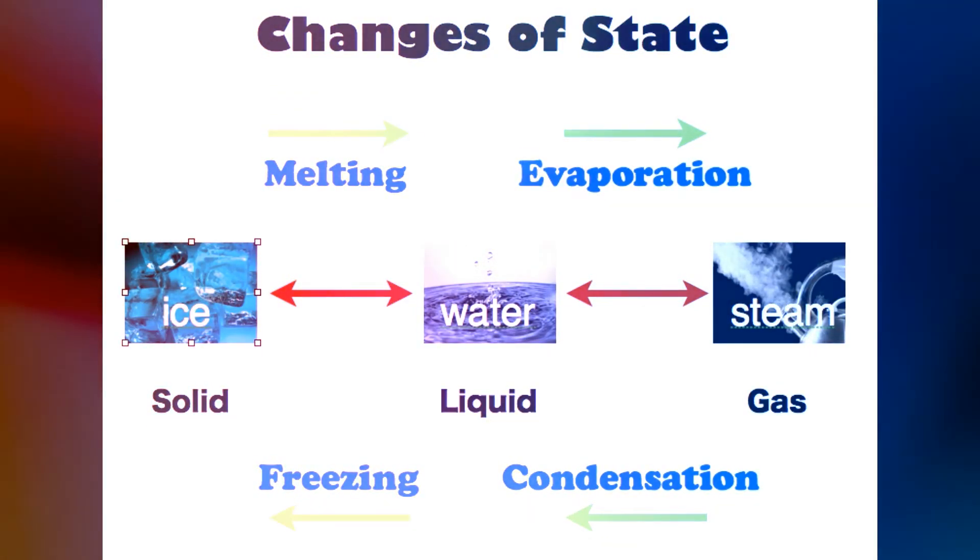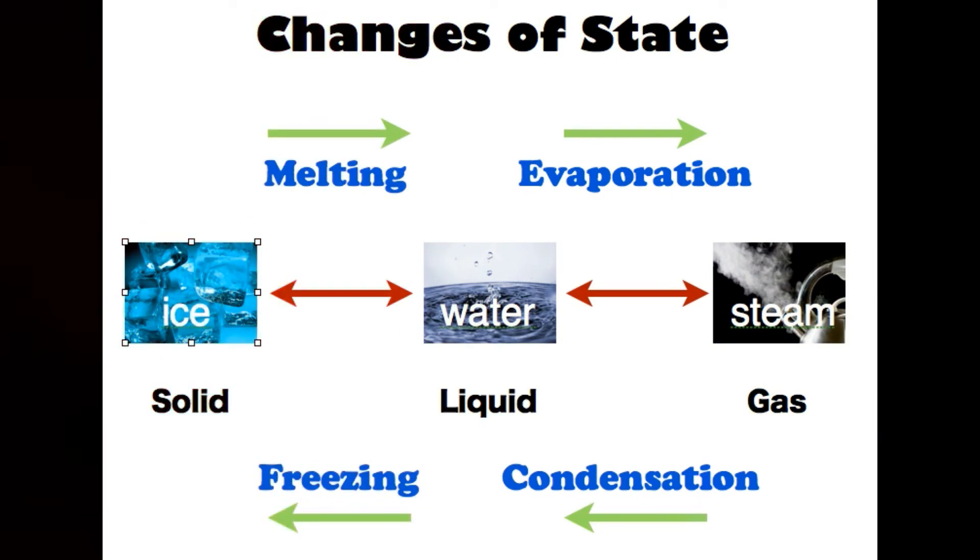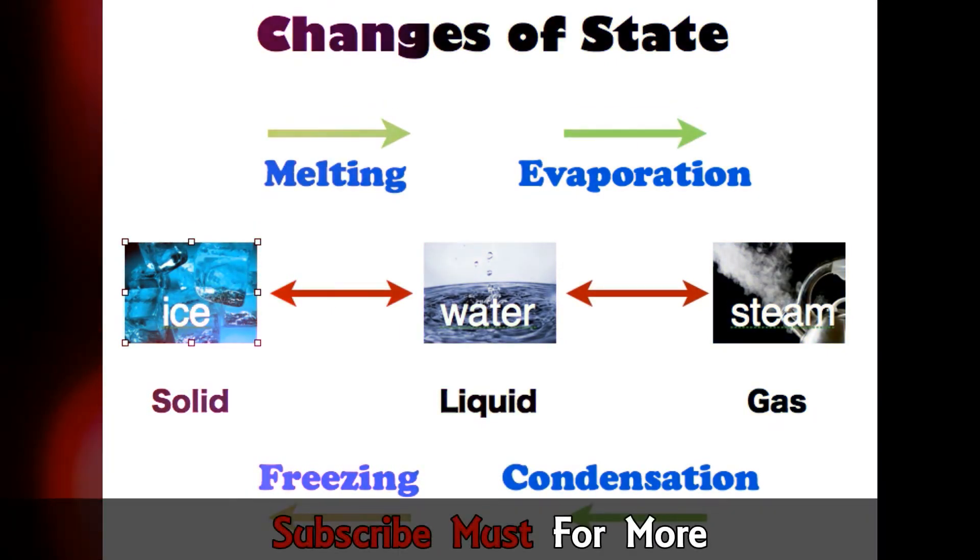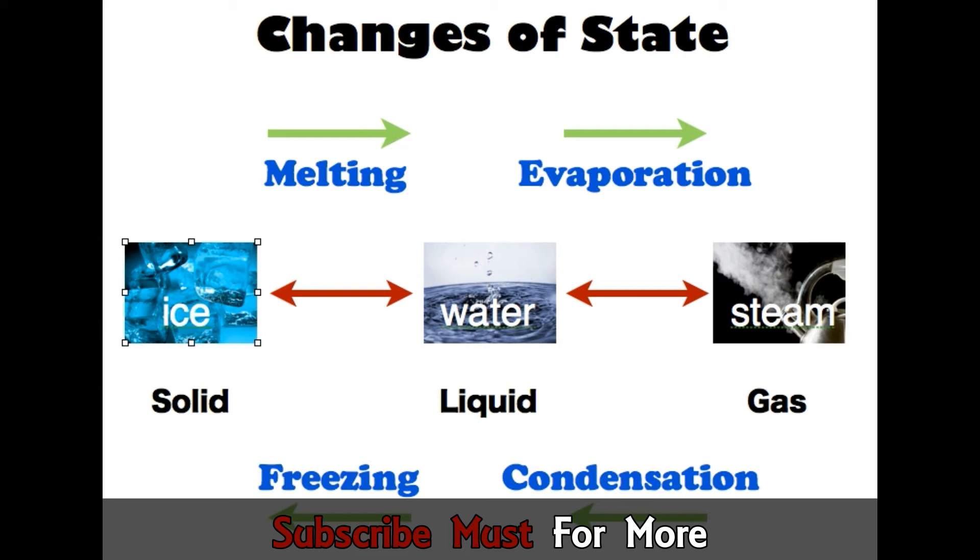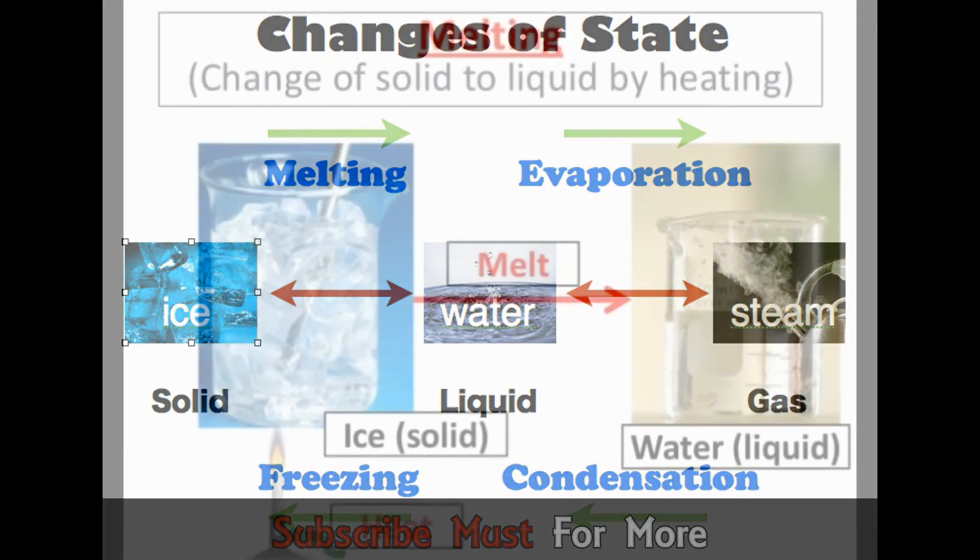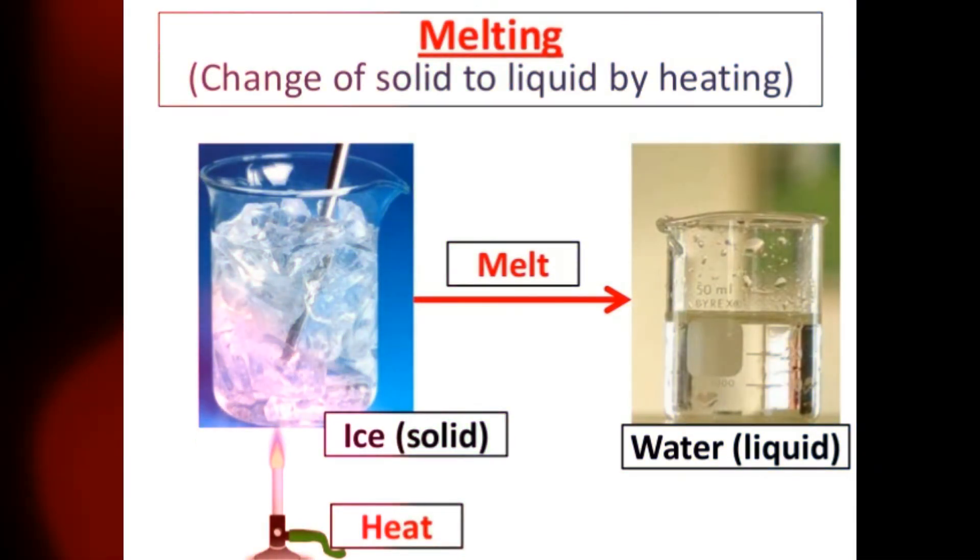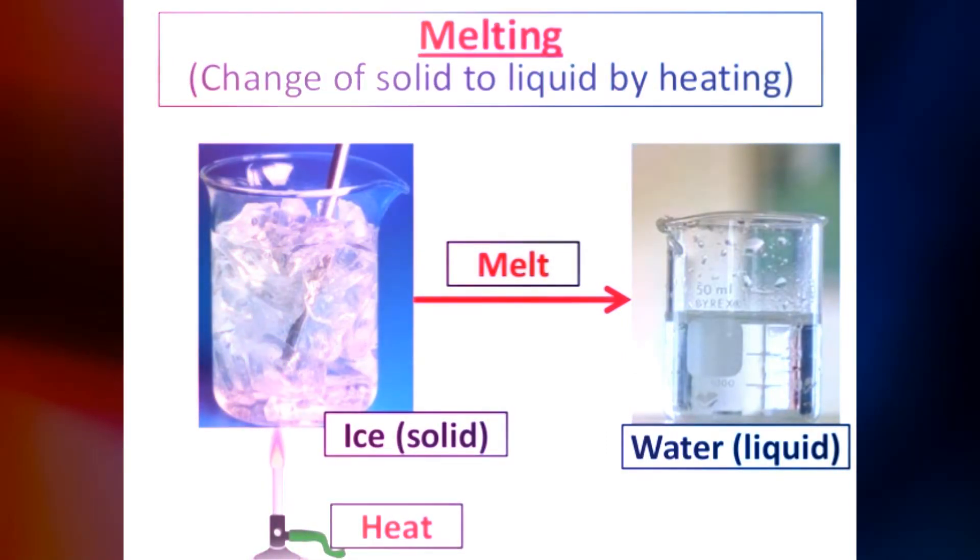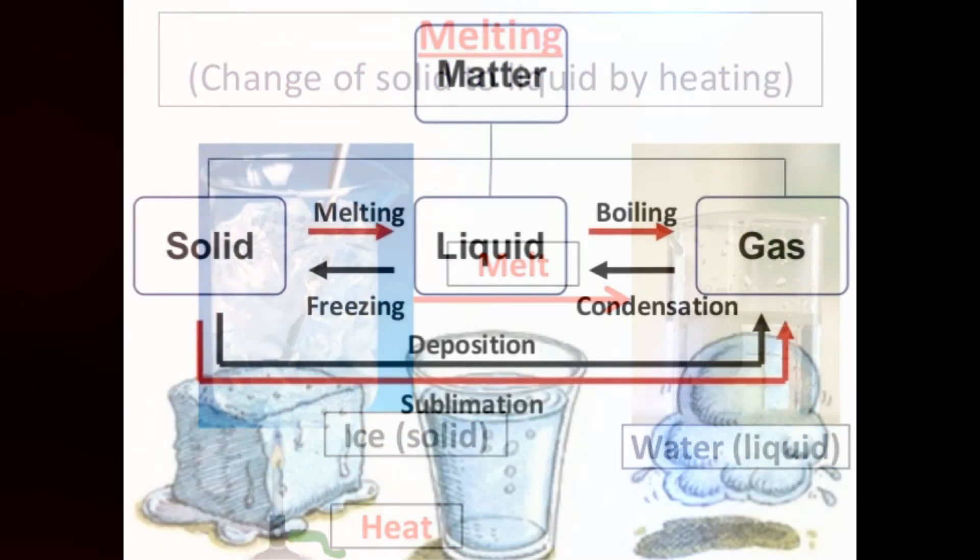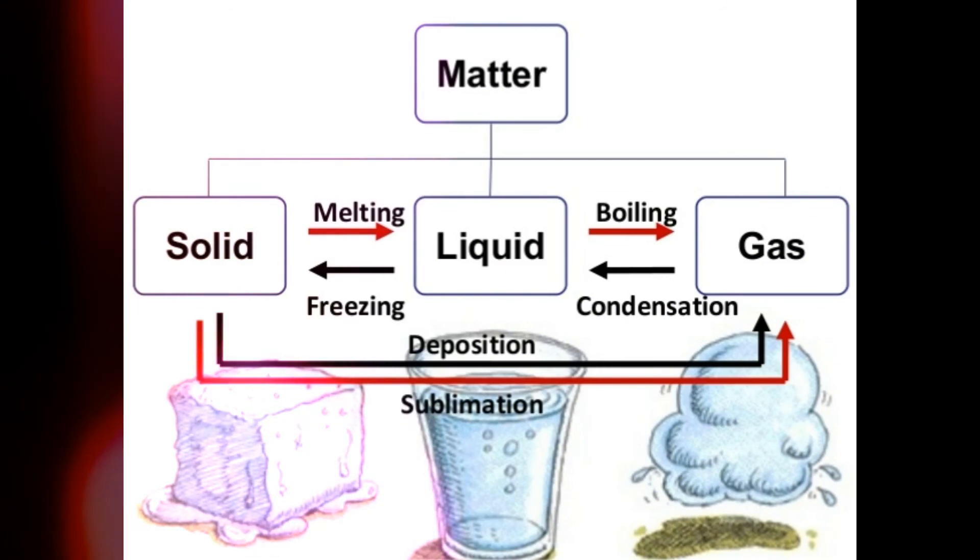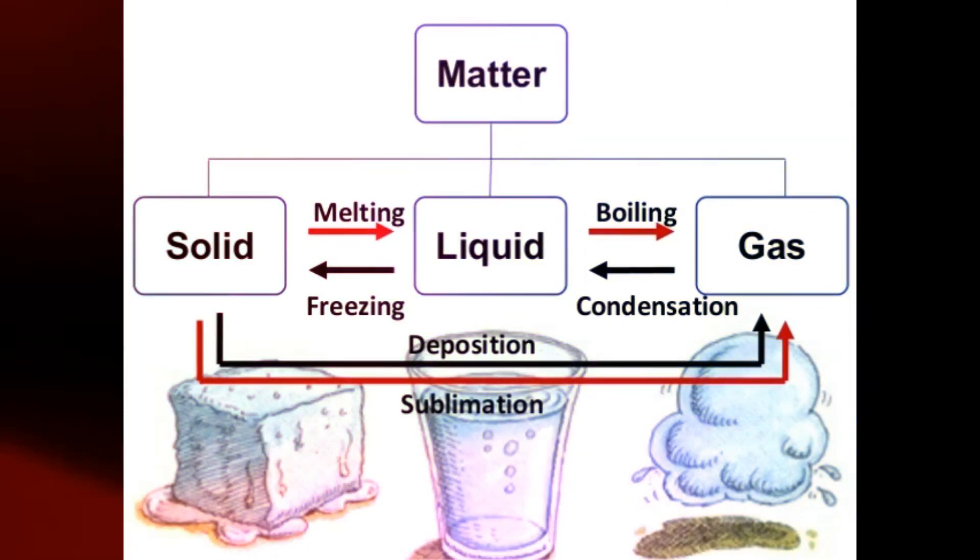Heating or cooling matter does not always change its state. Adding or taking away just a little heat may only change the temperature of the substance. However, adding or taking away a lot of heat can change the state of matter.